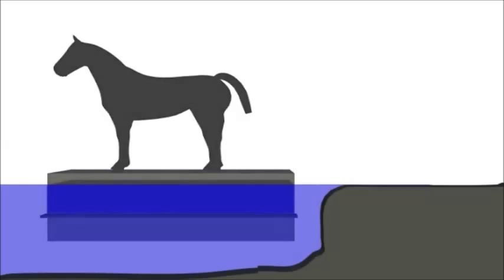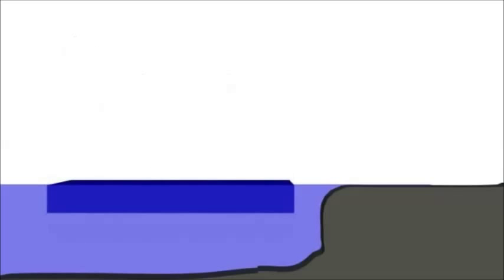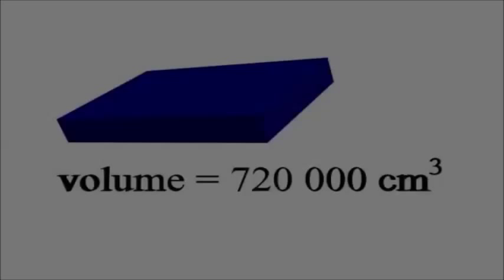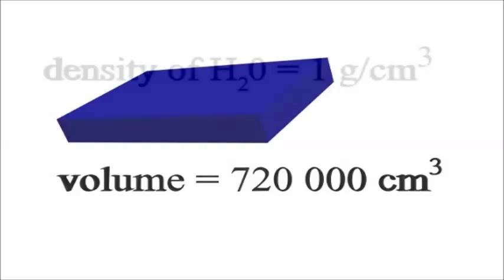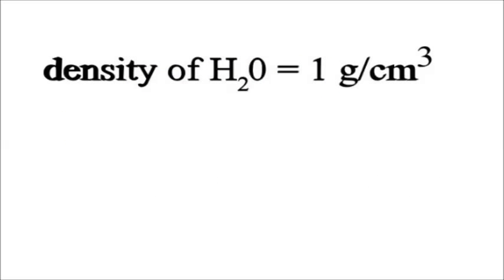...is a rectangular prism 300 centimeters by 200 centimeters by 12 centimeters. This is the volume of the displaced water. Now we need to calculate its weight. Fresh water has a density of 1 gram per cubic centimeter.